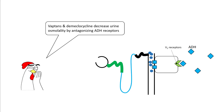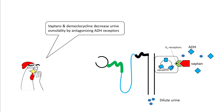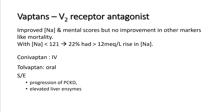Vaptans and demeclocycline decrease urine osmolality by antagonizing ADH receptors. V2 receptors in the distal convoluted tubules normally cause aquaporin channel insertion and free water absorption; vaptans block these receptors, internalizing aquaporin channels and increasing free water loss in the urine, helping hyponatremia. Vaptans improve sodium and some mental status scores, but there is no improvement in mortality, and they can cause a rapid rise in sodium. Tolvaptan is available orally but has been associated with polycystic kidney disease progression and elevated liver enzymes.